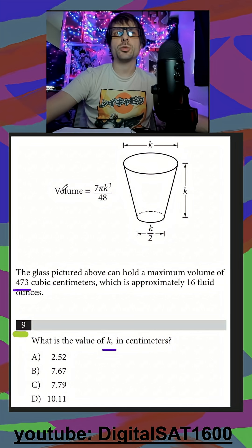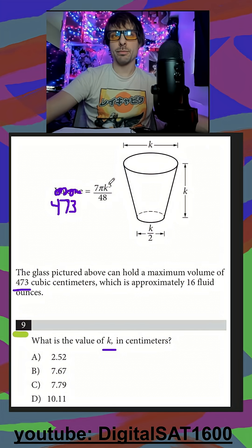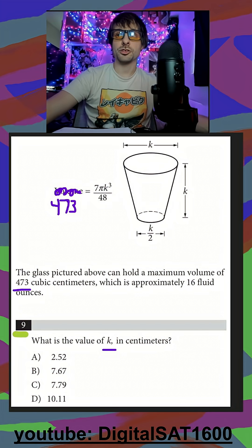So this is a pretty standard situation where we replace volume here with 473, and then all we would have to do is solve for our k value here. But remember, we can just have Desmos do all our algebra for us.